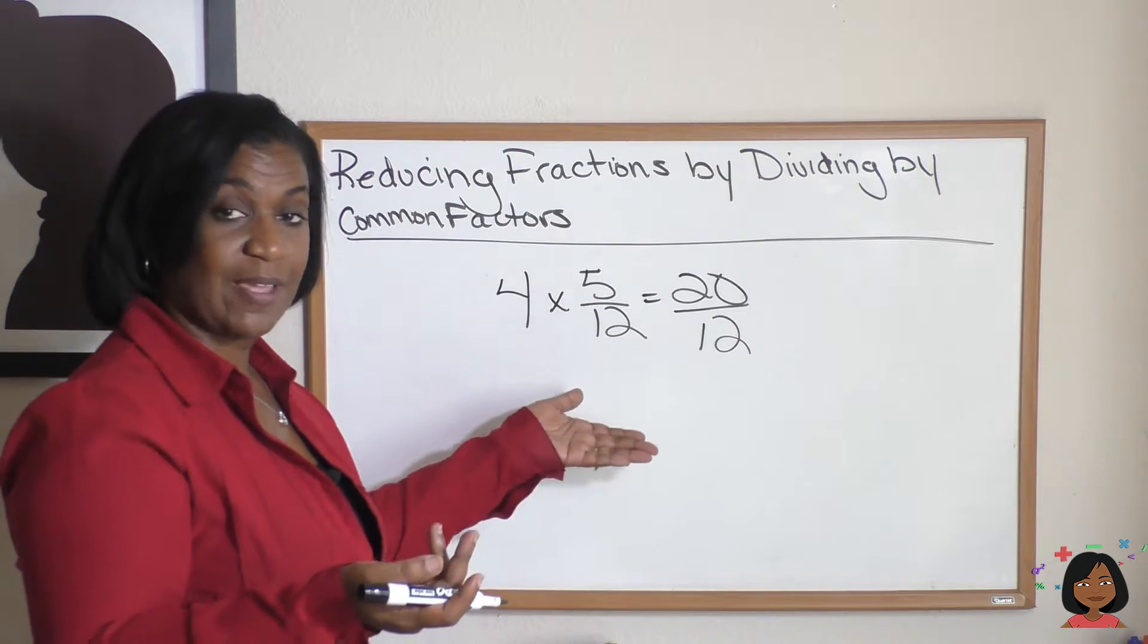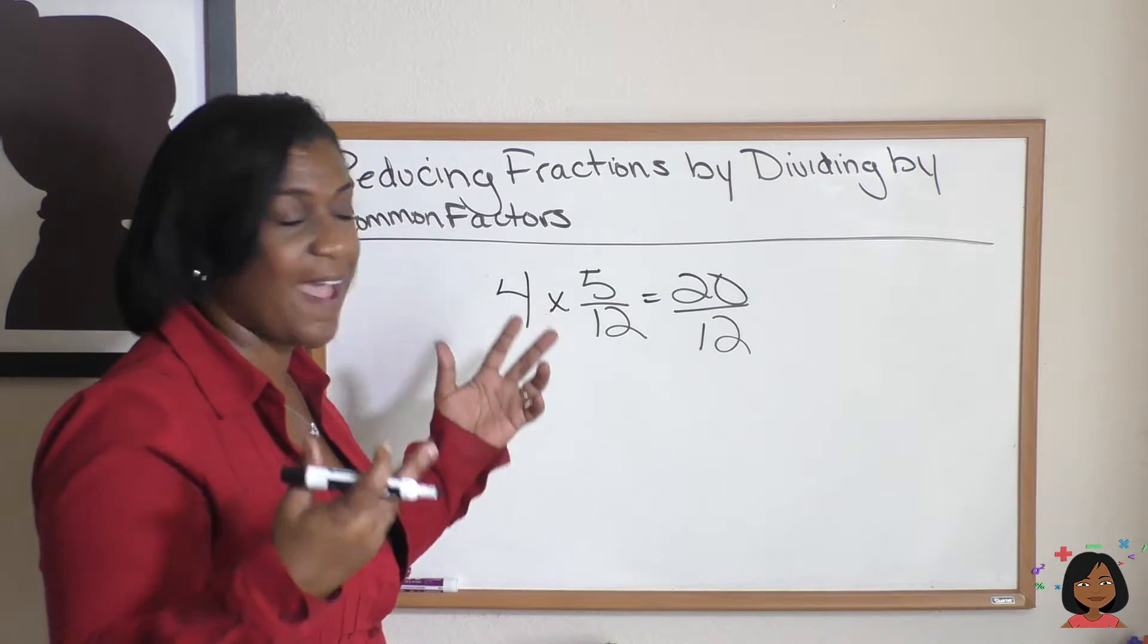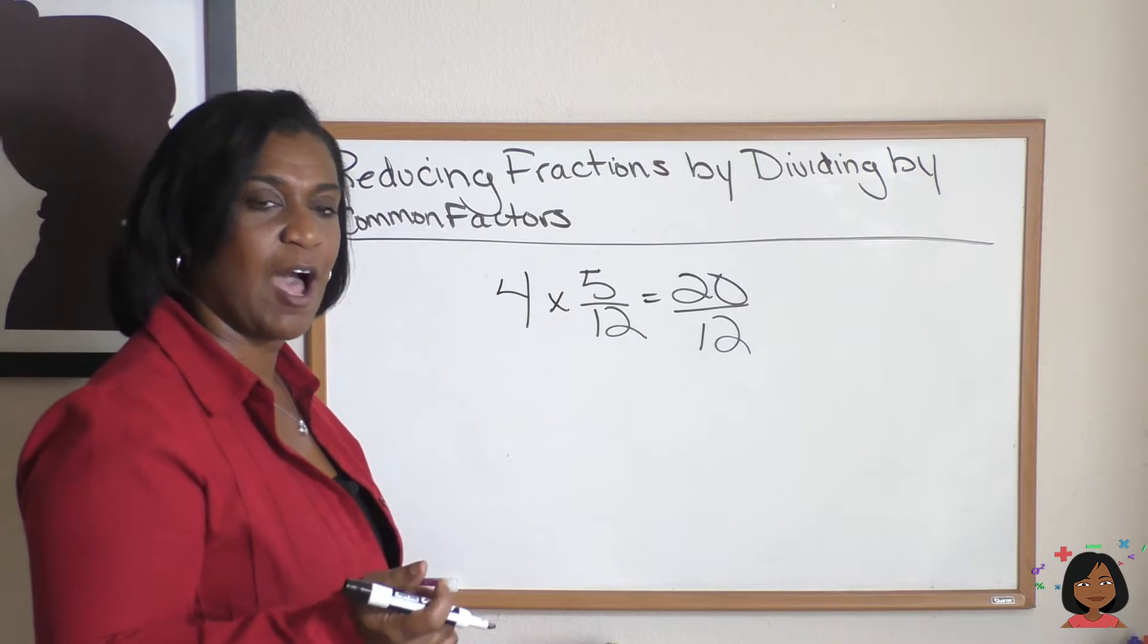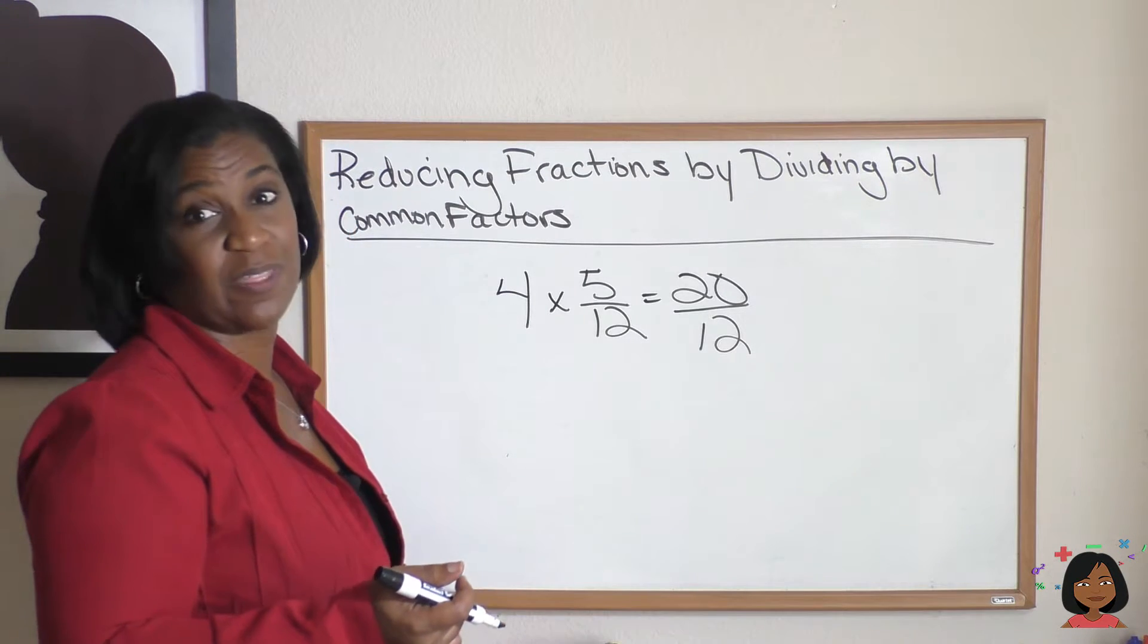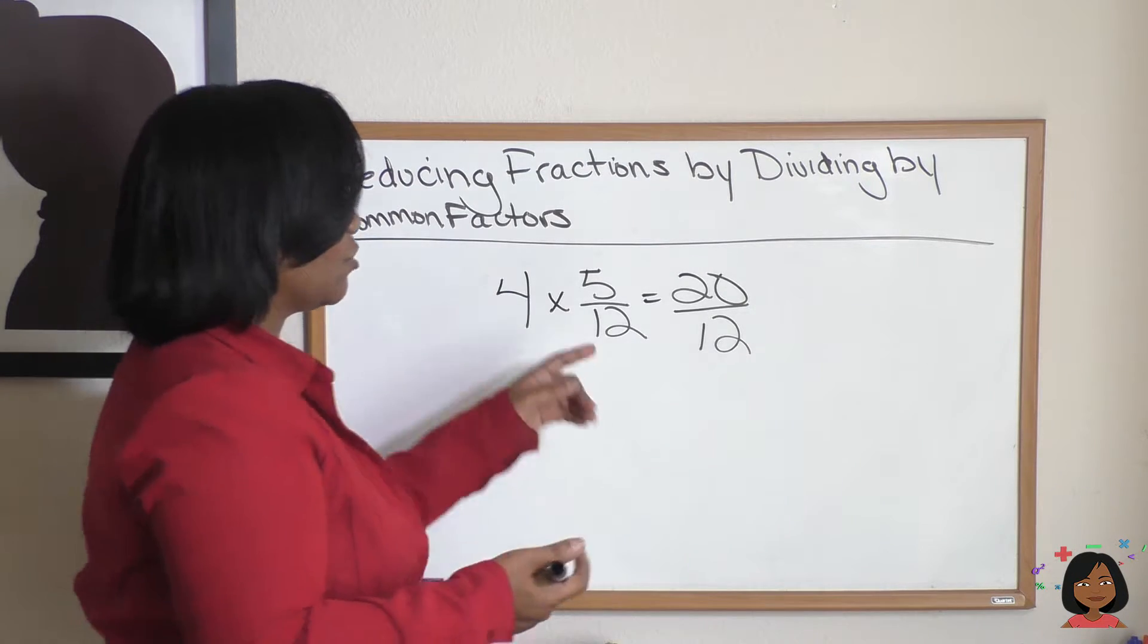But we're not going to keep 20/12, are we? We can reduce right there. So think of the greatest common factor that they both have in common. I think that'd be the number 4.